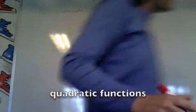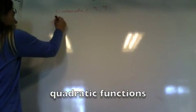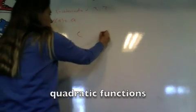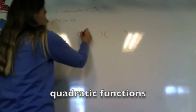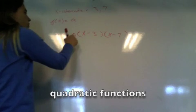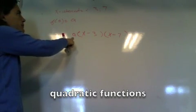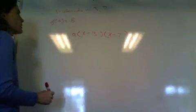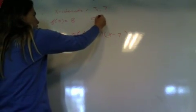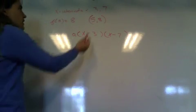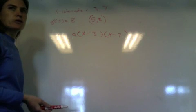The zeros are 3 and 7, and f(5) equals 8. So we know two of the factors are going to be x minus 3 and x minus 7. The only thing we don't know is this value of a that might be here. So if I know f(5) equals 8, that's the same as saying the point (5, 8) is on the graph. So we just plug in 8 and 5 for x and y and solve the equation.